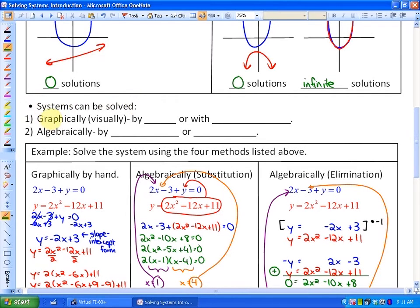So here's the four methods. Systems can be solved graphically, or visually. And there's two methods that we can do this graphically. One is by hand.